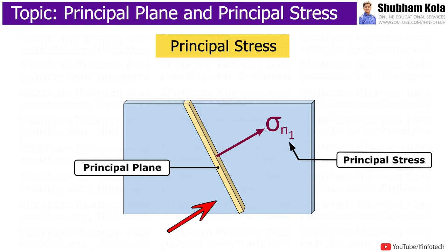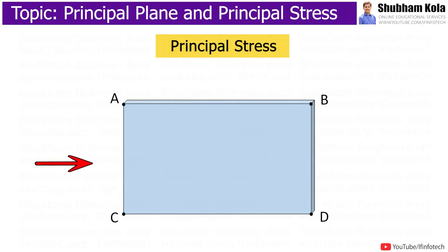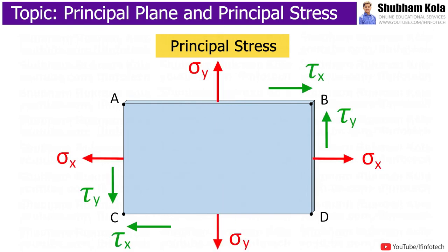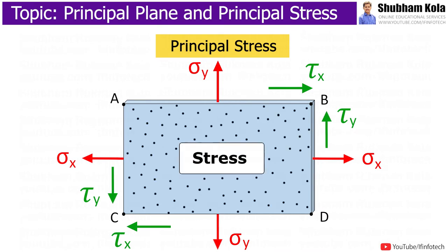So, to understand concept of principal plane, let us consider a two-dimensional rectangular body with different direction of loading with different magnitudes. And due to loading, the stress is induced in rectangular body. The stress is the internal force of resistance which is set up by body against external force acting on the body.